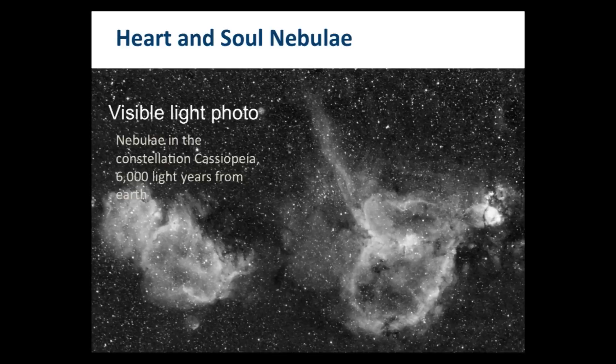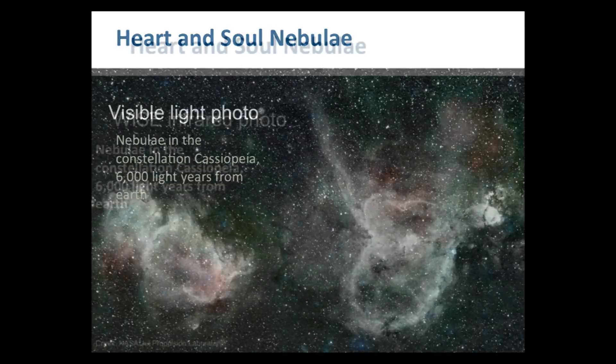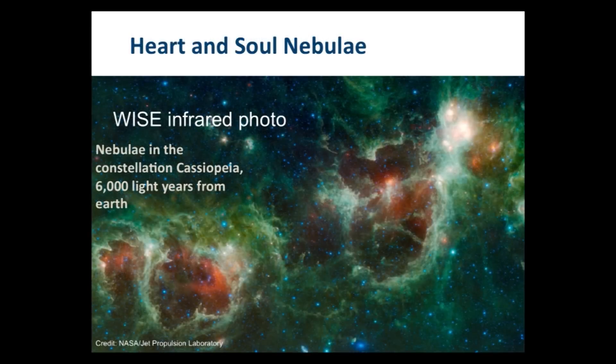This is the Heart and Soul Nebula — actually an image taken from Earth in the visible wavelengths. We can see some of the cloud-like structure because the particles scatter the light from the nearby stars. You're not really seeing the temperature of the object itself. But if we can see with temperature using the WISE telescope, we get a very different picture — much more detail about the structure, and that tells us something about the processes going on.